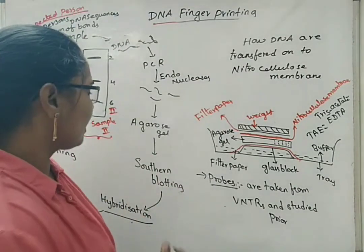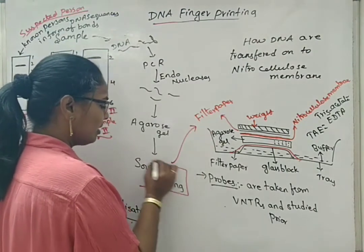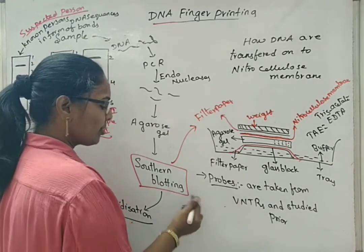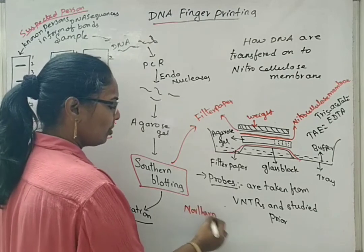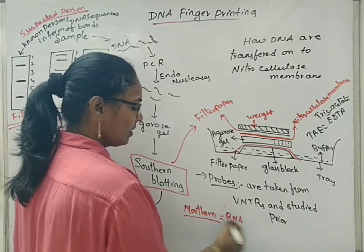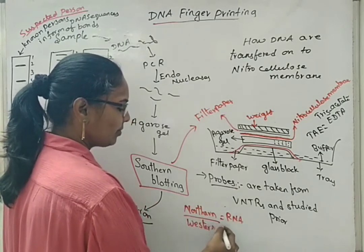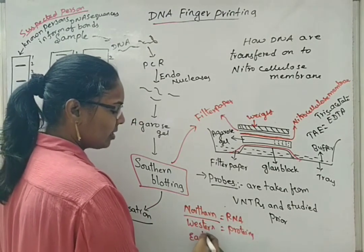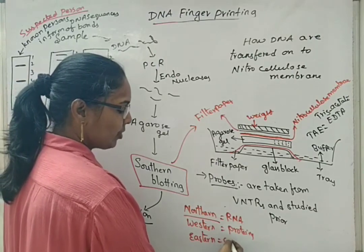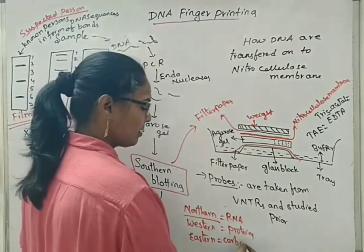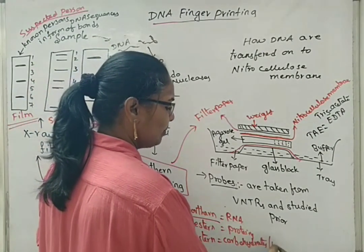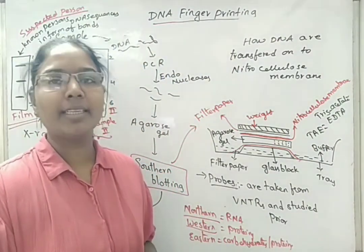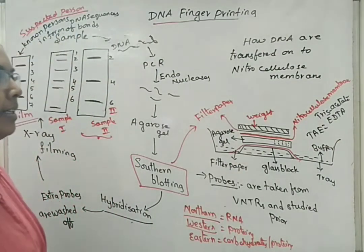We used one term: Southern blotting. If there is Southern blotting used for extraction of DNA, there is also Northern blotting, used for extraction of RNA. Western blotting is used for extraction of proteins or immunoglobulins. There is also another term, less used, for identification of carbohydrates and rarely proteins. Nowadays, western blotting is not that much used — instead, the ELISA technique is used. This is all about the DNA fingerprinting method.